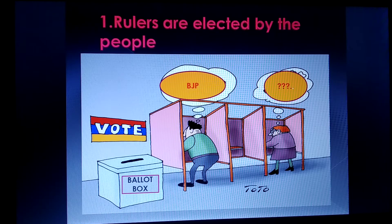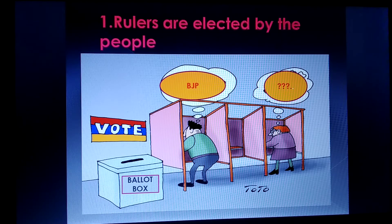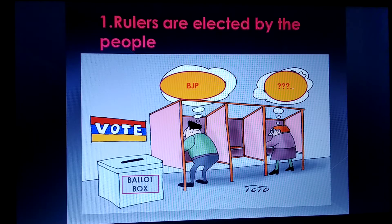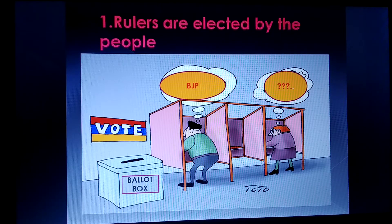People have the right to choose their own representatives. In this figure you can also see an election procedure — one person is clearly voting for BJP while another is in doubt about whom she should vote for. Rulers are elected by the people in a democratic government, and after every five years people have the chance to change their representatives.